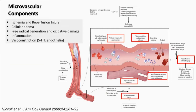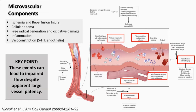The microvascular components are complicated. In summary, they are related to ischemia and reperfusion, cellular edema, free radical and oxidative damage, inflammation, and the liberation of vasoconstrictive entities such as serotonin. The take-home point is: you can have no macrovascular occlusion — it can be entirely microvascular — and you can still have no flow. That's the frustrating part of no-reflow.